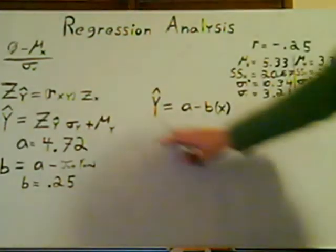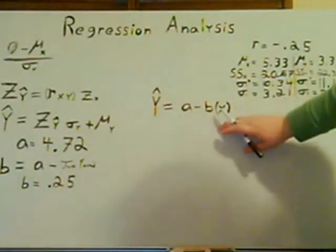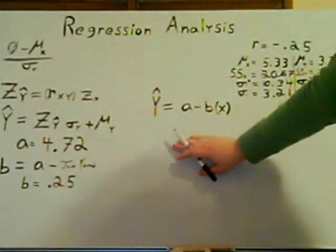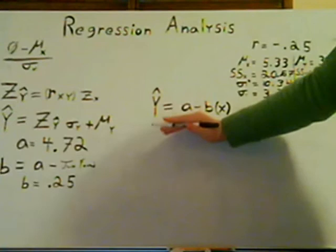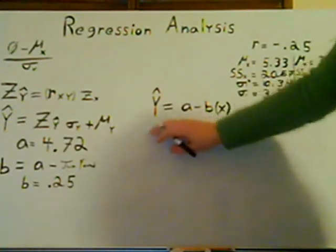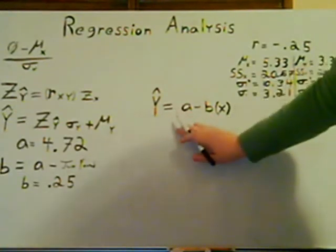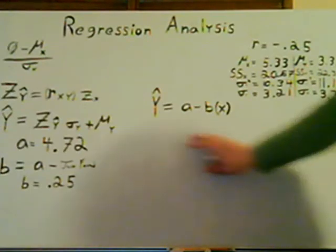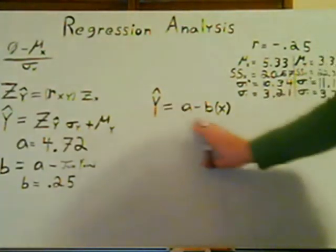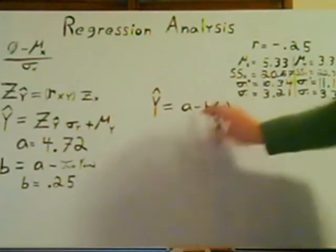And now we can plug it in to the master formula or the regression formula up here. This is what we've been trying to get out this entire time. Y hat equals A minus B times X. Almost looks like Y equals MX plus B. Just a little flipped around.